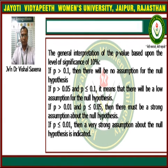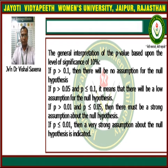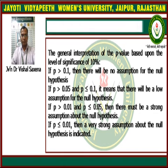Here is a general interpretation of the p-value based upon a level of significance of 10%. If p is greater than 0.1, there will be no assumption for the null hypothesis. If p is between 0.05 and 0.1, there will be a low assumption for the null hypothesis. If p is between 0.01 and 0.05, there must be a strong assumption about the null hypothesis. And if p is less than or equal to 0.01, a very strong assumption about the null hypothesis is indicated.